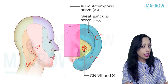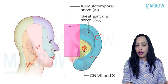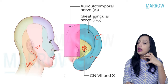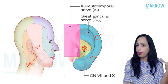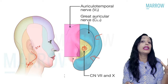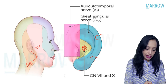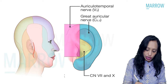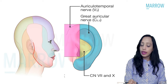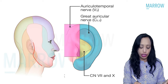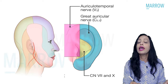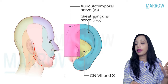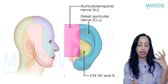During parotid surgery, if there is injury to a nerve causing numbness in the shaving area or numbness in the lobule, which nerve has been injured? During parotid surgery, the incision is given in a specific way. When this incision is given, the greater auricular nerve — which lies very superficially just below the skin — is very commonly injured, leading to anesthesia or numbness in the shaving area.